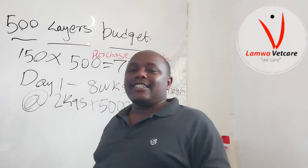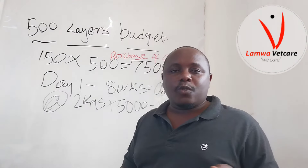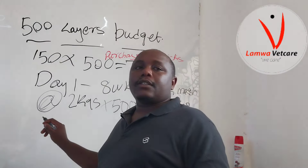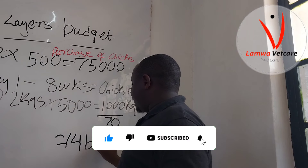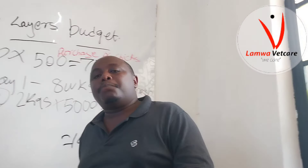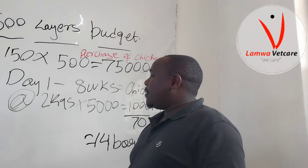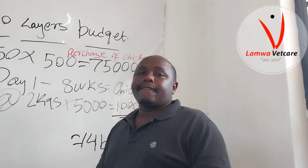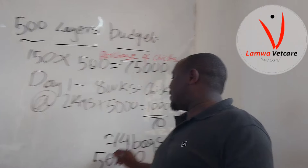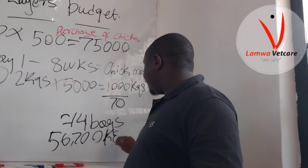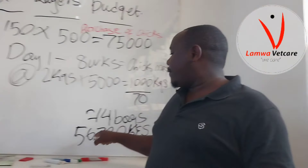Converting 1,000 kg to bags gives us 14 bags of chick mash. A chick mash bag is going for 4,050 shillings on the market right now. 4,050 times 14 gives us 56,700 Kenyan shillings — with that amount you are able to raise your birds on the feed budget for two months.